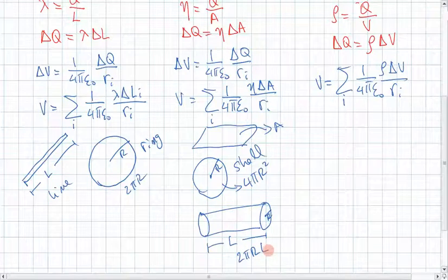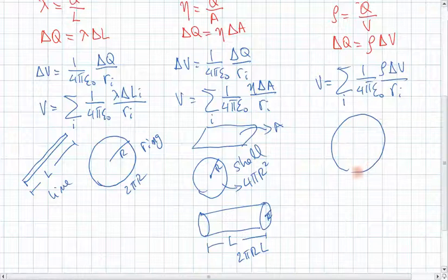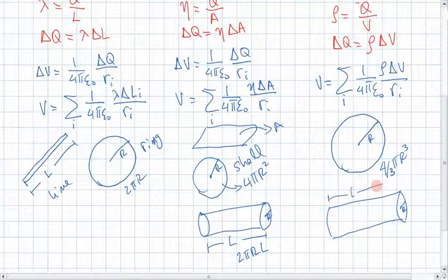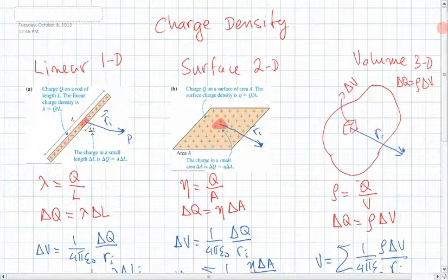For volume distributions, we would typically have a sphere — that's the one we use most — and the volume of a sphere is 4/3 pi r cubed. We could also have a cylinder with radius r and length l, and the volume of that cylinder would be pi r squared times l. So this is a quick review of charge density and how we use it in different problems.